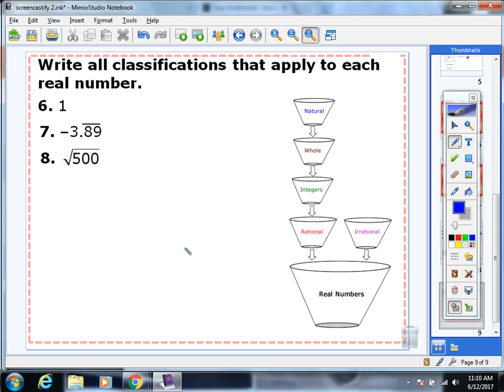All right, a few more practice problems. The number one would fall in this top bucket and get 1, 2, 3, 4, 5 classifications. So natural, whole, integer, rational, and real.